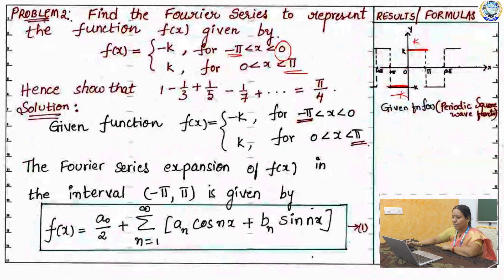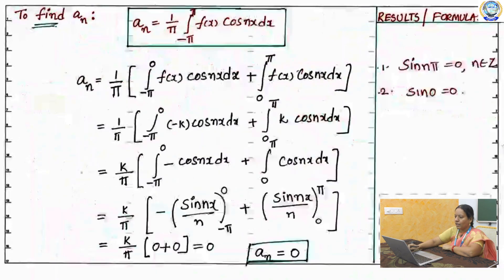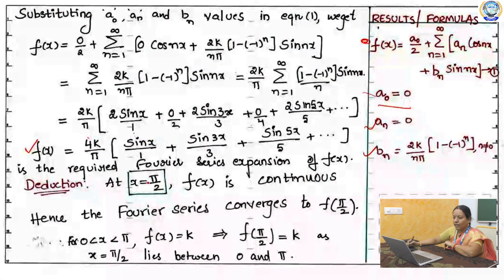The first part — finding the Fourier series expansion — is complete. Now the second part is deduction. In your problem the series is 1 minus 1 by 3 plus 1 by 5 minus so on. Observe your Fourier series expansion — you got 4k by pi sin x by 1. When will sin x equal to 1? For what value of x will this value equal to 1?